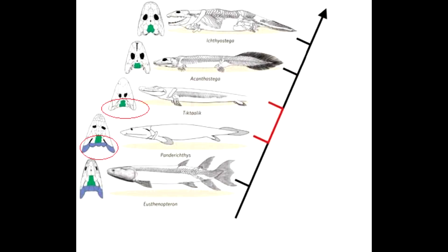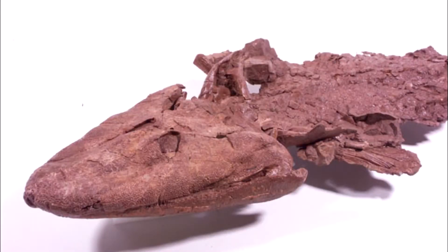He also says that the opercular series might merely be missing from Tiktaalik, thus making it more fish-like than the reconstruction appears. I would say this is unlikely given the fact that none of the specimens found had a preserved operculum, and that the bones to which they would ostensibly articulate had no articular surfaces to accommodate it. So with these facts in mind, it seems safe to say that David's video is not relevant to the question of Tiktaalik's status as a transitional form. Thanks for listening.